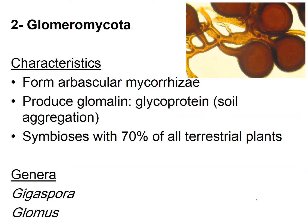The Glomeromycota are characterized by their ability to form arbuscules — as you can see in the picture — which are large structures used to store energy. They form arbuscular mycorrhizae and can produce glomalin, a glycoprotein that is very important in gluing soil particles together and contributing to soil aggregate formation. Since they form arbuscular mycorrhizae, they can form symbioses with at least 70% of all terrestrial plants. The genera belonging to Glomeromycota include Gigaspora and Glomus.